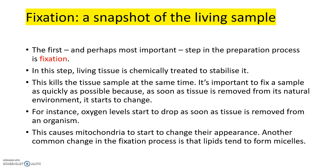The first and perhaps most important step in the preparation process is fixation. In this step, the living tissue is chemically treated to stabilize it, which kills the tissue sample. At the same time, it is important to fix a sample as quickly as possible, because as soon as the tissue is removed from its natural environment it starts to change. For instance, oxygen levels start to drop as soon as the tissue is removed from an organism, causing the mitochondria within the cell to start to change their appearance.